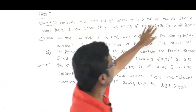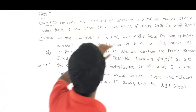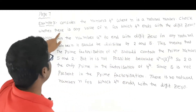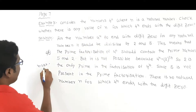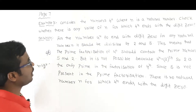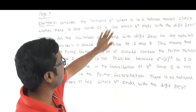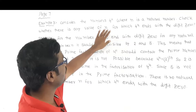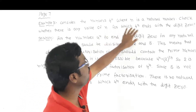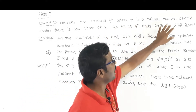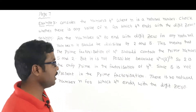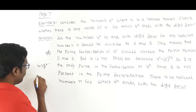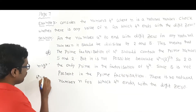Check whether there is any value of n for which 4 to the power of n ends with the digit 0 — that is, the last digit of 4 to the power of n is 0.